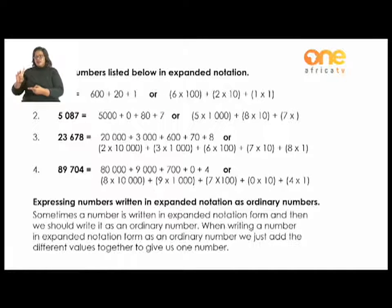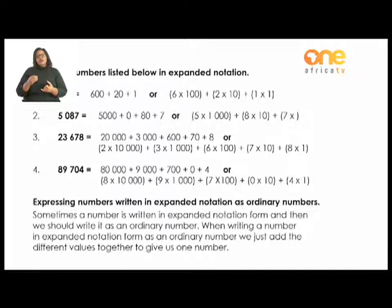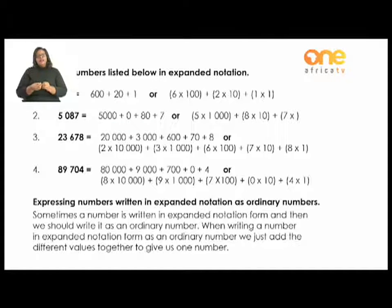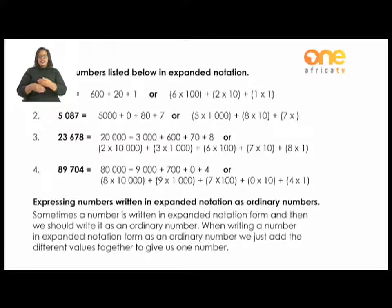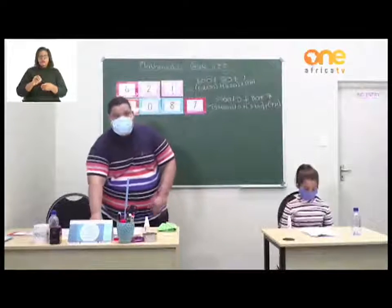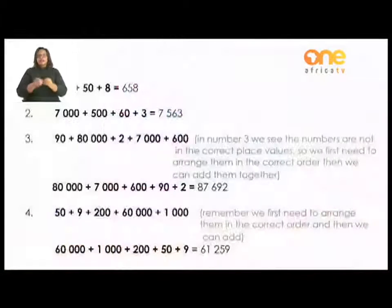Now let's look at expressing numbers written in expanded notation as ordinary numbers. Sometimes a number is already written in expanded notation form, and we need to write it as an ordinary number. When doing this, we just add the different values together to give us one number. Let's go to page 23 in our books.